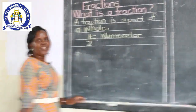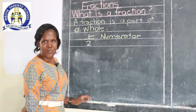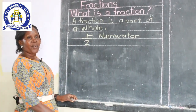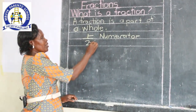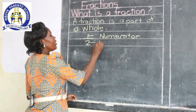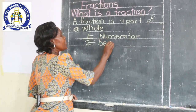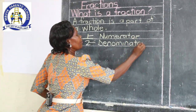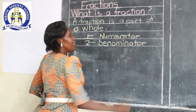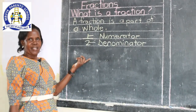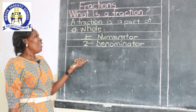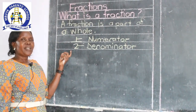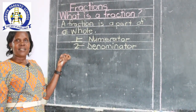Can we all say numerator? Good. So the top number is called a numerator. Then the bottom number, we call it a denominator. Let's all say denominator. Good. So we shall say: the top number is the numerator, and the bottom number is the denominator.